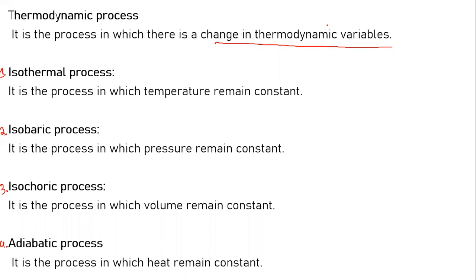There are mainly four types of processes. The first one is the isothermal process. 'Iso' means same, so if in a process the temperature remains the same, that type of process is called an isothermal process. It is a process in which temperature remains constant, while pressure and volume must be different.